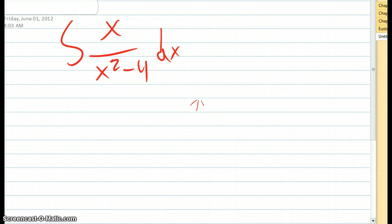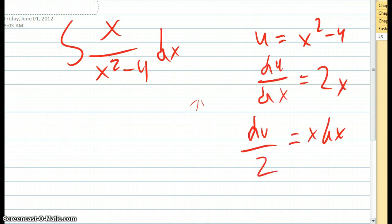So in this problem we'll be doing substitution. So we'll let u equals x squared minus 4. So substituting, we get du over dx equals 2x, and then if we multiply by dx and divide by 2, we get du over 2 equals x times dx.